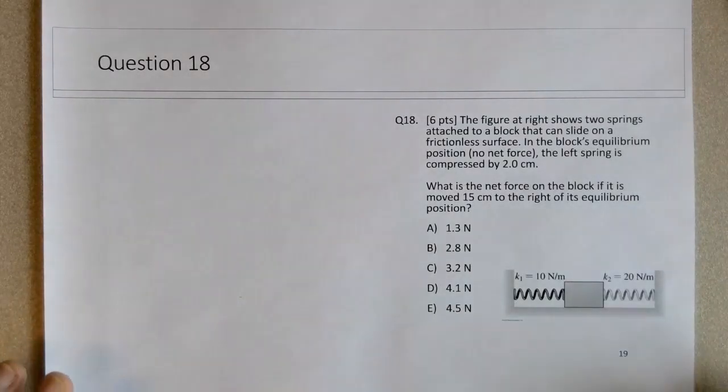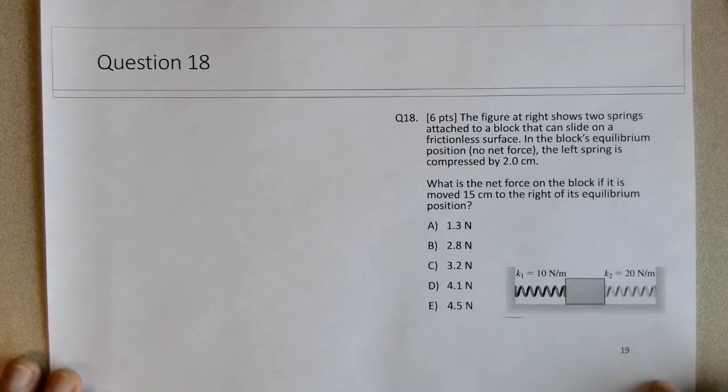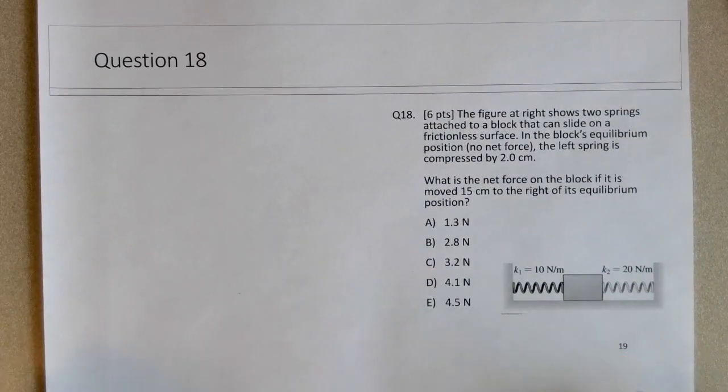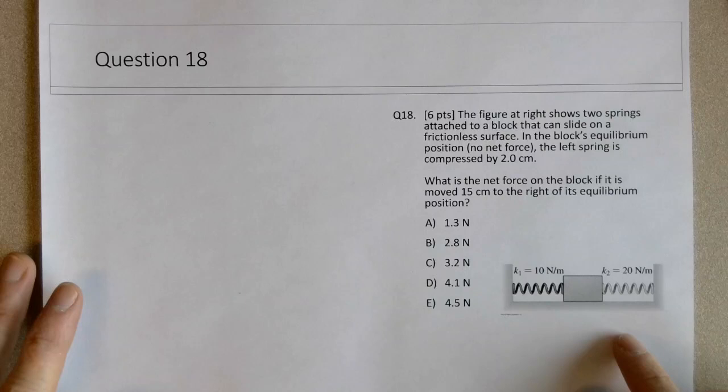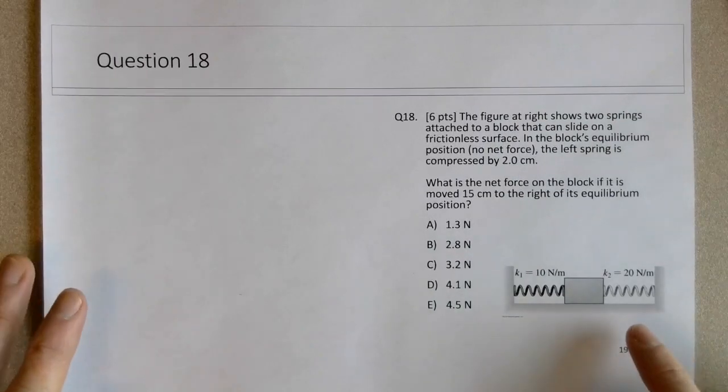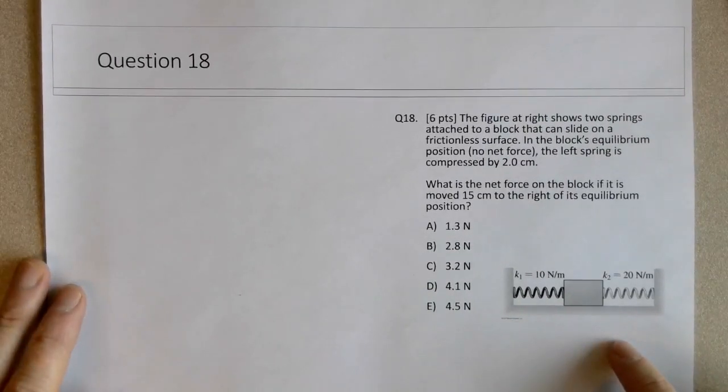Okay, so question 18 of the final exam review is a spring question. Since this is question 18, that's about halfway through the exam, it's more likely that this will be a Hooke's Law question rather than a spring potential energy question.